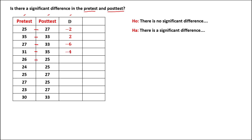26 minus 25 is positive 1. 24 minus 25 is negative 1. 25 minus 27 is negative 2. 27 minus 25 is positive 2. Then 23 minus 27 is negative 4. And 30 minus 33 is negative 3.